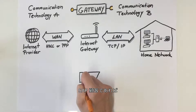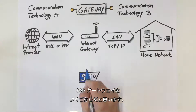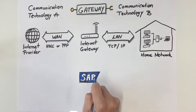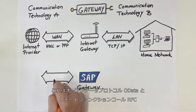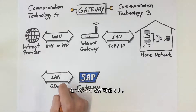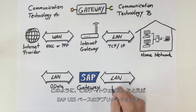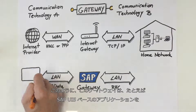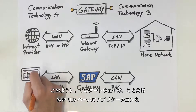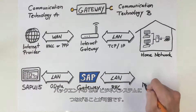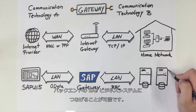If you are an SAP customer, you might be familiar with the SAP gateway. This can connect the open data protocol OData with remote function calls RFCs. As such, this gateway enables SAPUI5-based applications, for example, to connect with SAP business systems in the backend.